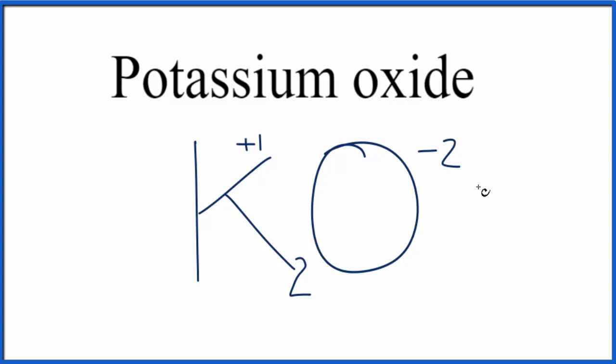There's a quick way we can check our work. It's called the crisscross method. In the crisscross method, we take the two, move it down here to the subscript for the potassium, then we move the one over here, but we don't write one. It's assumed that it's there.